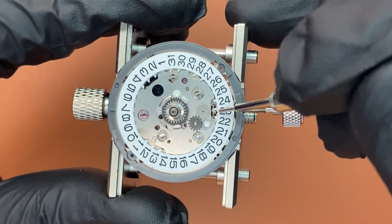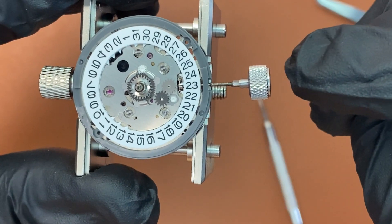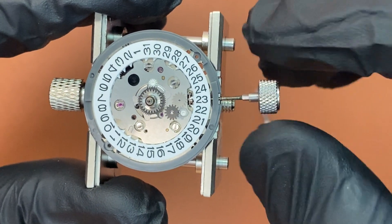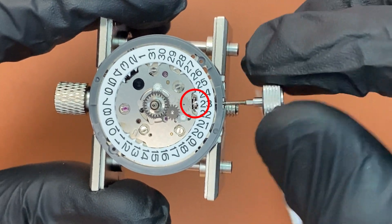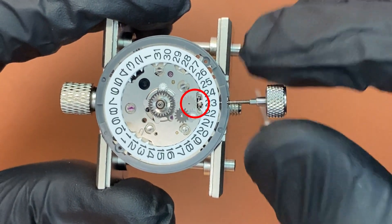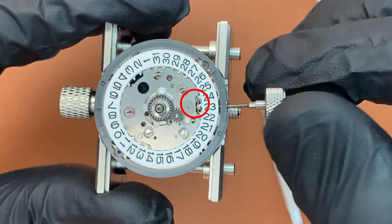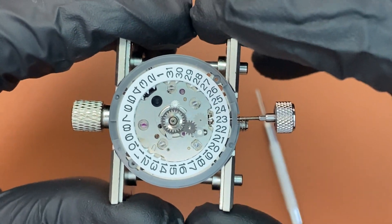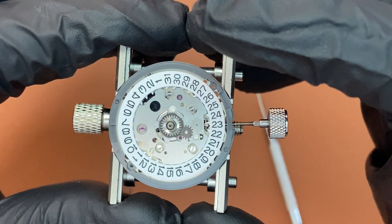So I'm on my quick date change setting, and when I turn it, notice the gear is not moving that date wheel transmission wheel. This is what I suspect is the problem, and I'm going to disassemble it and have a look.